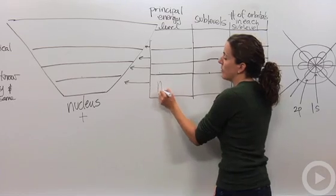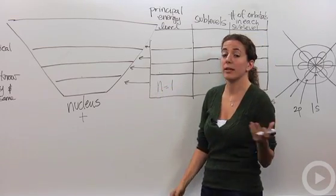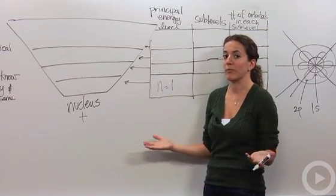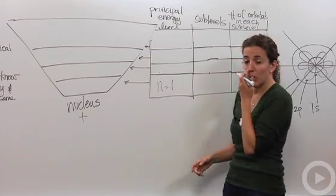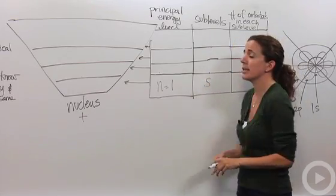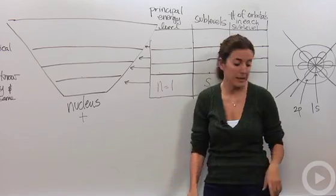In the principle energy level n equals 1, n tells us which principle energy level is which, we have one orbital. We're going to call it the S orbital. Let's give an idea of what the S orbital actually looks like.